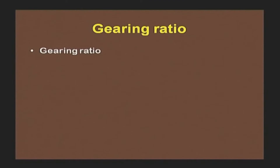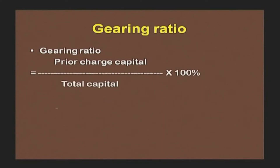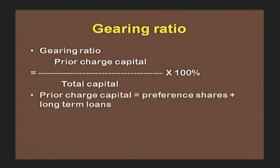Gearing can impact a positive impression on capital structure where trading on equity is exercised and cash flows are predicted to be adequate. Under gearing ratios, it is computed as prior charge capital to total capital × 100. Prior charge capital means preference share capital plus long-term loans.